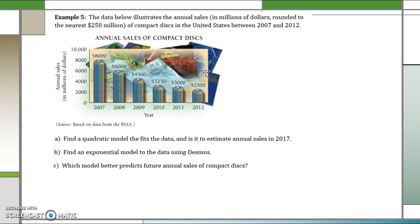The data below illustrates the annual sales in millions of dollars rounded to the nearest 250 million of compact disks in the United States between 2007 and 2012. Find a quadratic model that fits the data and estimate its annual sales in 2017. Find an exponential model to the data, and then which model better predicts the future annual sales of compact disks. So I'm going to use 0, 1, 2, 3, 4, and 5 with my data when I transfer it over for the value of the years.